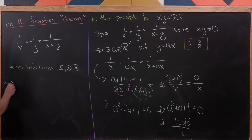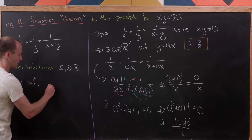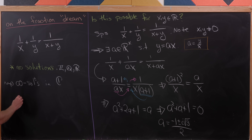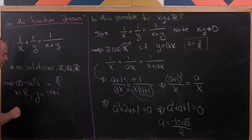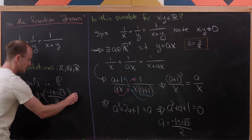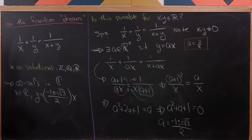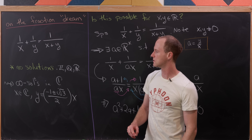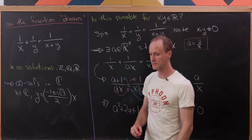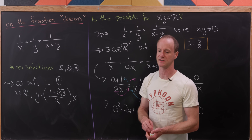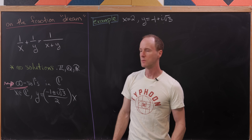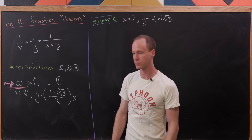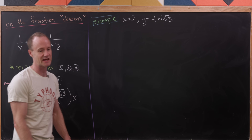But we have infinitely many solutions inside of the complex numbers. All of those solutions are of the form: x is any complex number, and y = ((-1 ± i√3)/2) · x. So we've got this parametrized family of solutions. Let's look at a particular solution and explore something going on in other number systems.